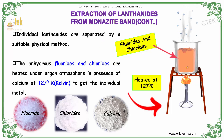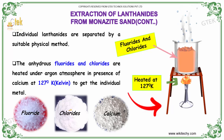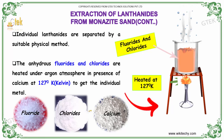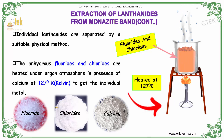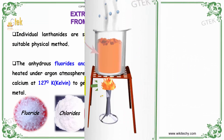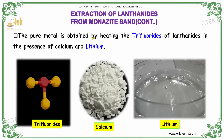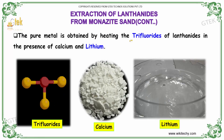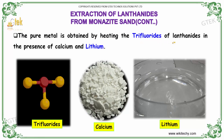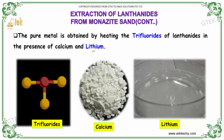Individual lanthanides are then separated by a suitable physical method. The anhydrous fluorides or chlorides are heated under argon atmosphere in the presence of calcium at 1270 degrees Kelvin to obtain the individual metal. The pure metal is obtained by melting the tri-fluorides of lanthanides in the presence of calcium and lithium.